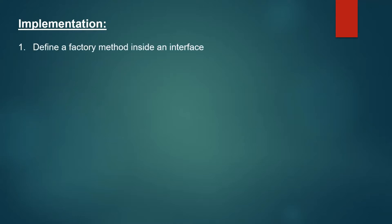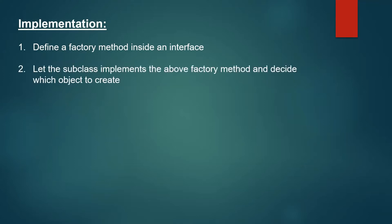Now let's see the steps involved in the implementation of the factory design pattern. The first step is to define a factory method inside an interface. Then let the subclass implement the factory method and decide which objects to create. These are the two steps involved in the implementation.